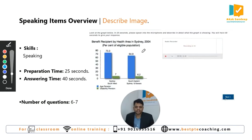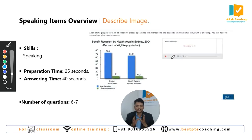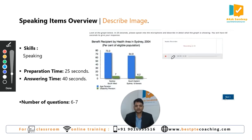The fourth question type in the speaking module is 'Describe Image.' In this question type, you will be given a flow chart, a bar diagram, a pie chart, a Venn diagram, a lifecycle image, a process image, or maybe a photograph.